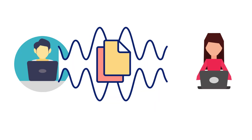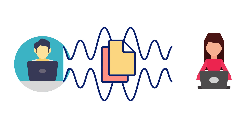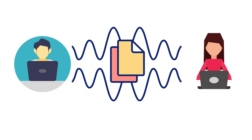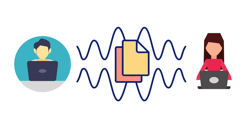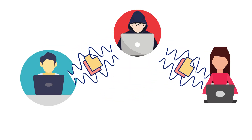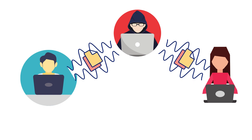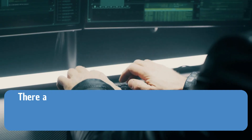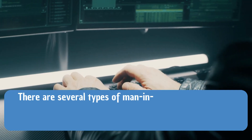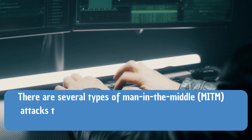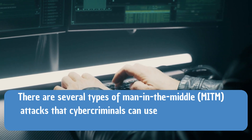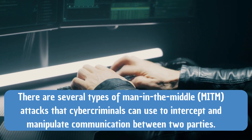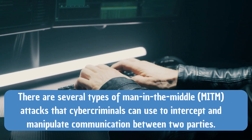A man-in-the-middle attack is a type of cyber attack in which an attacker intercepts communication between two parties who believe they are communicating directly with each other. There are several types of man-in-the-middle attacks that cybercriminals can use to intercept and manipulate communication between two parties.